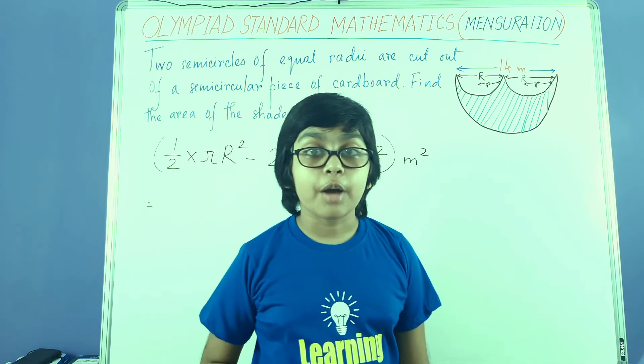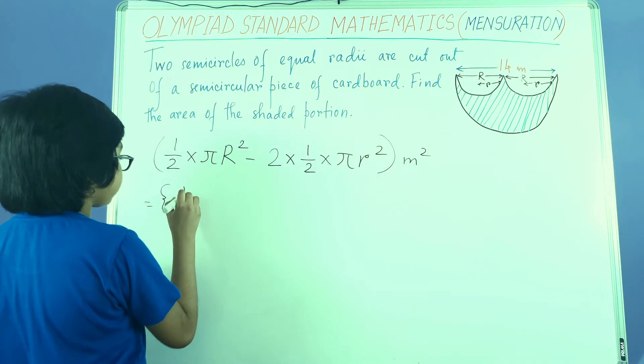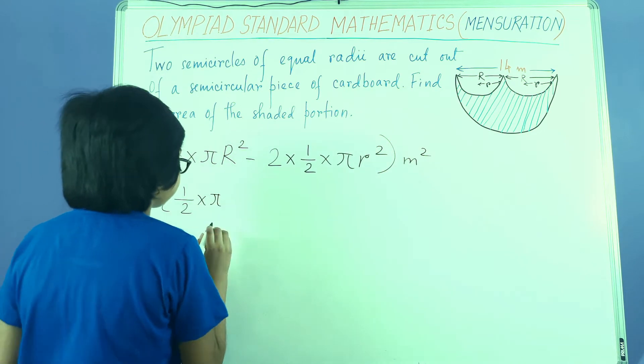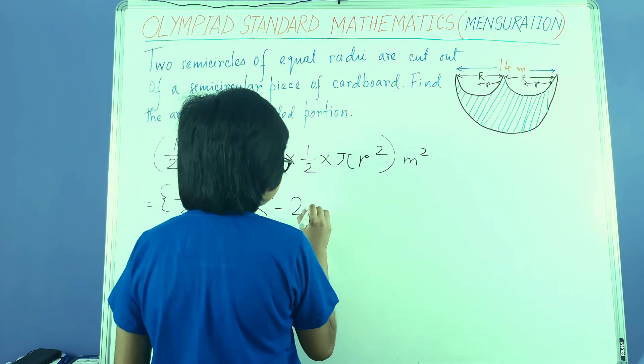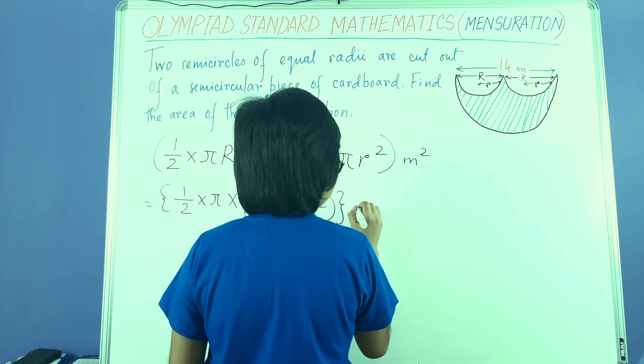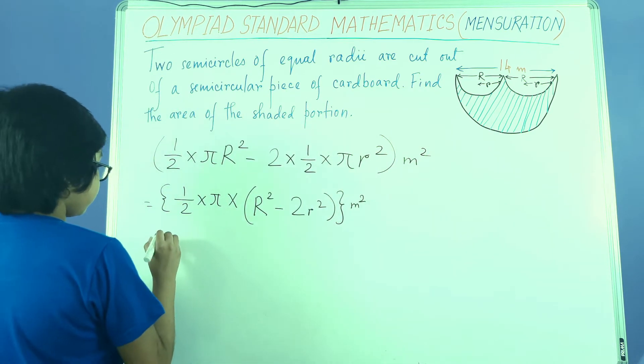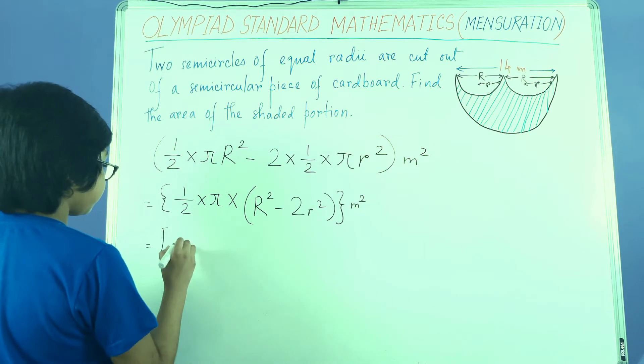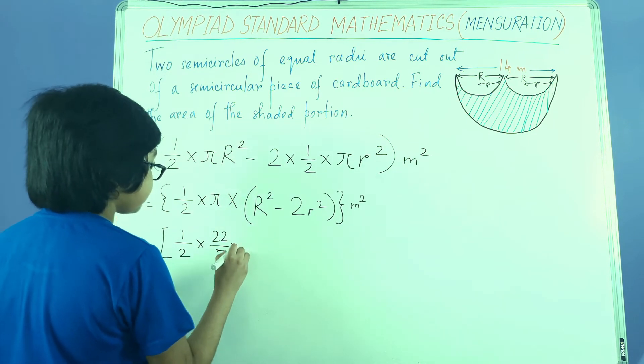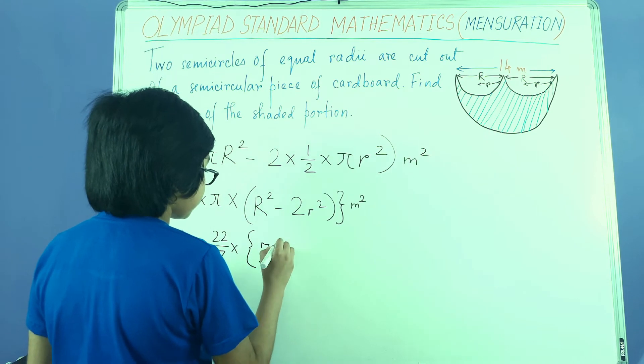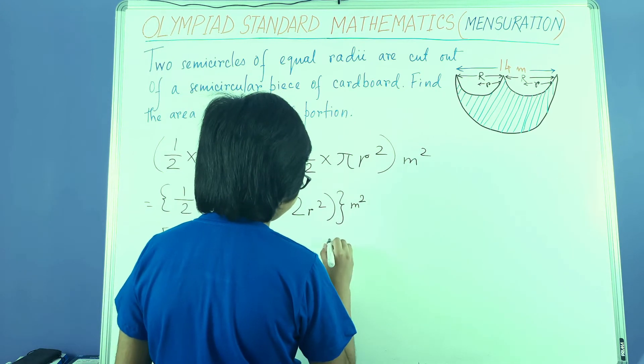Now we are taking common factor as half into pi. We are left with capital R squared minus 2 small r squared. Capital R's value was 7. Small r's value was 7 by 2 meters.